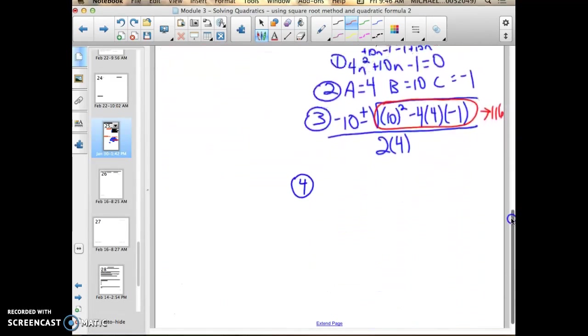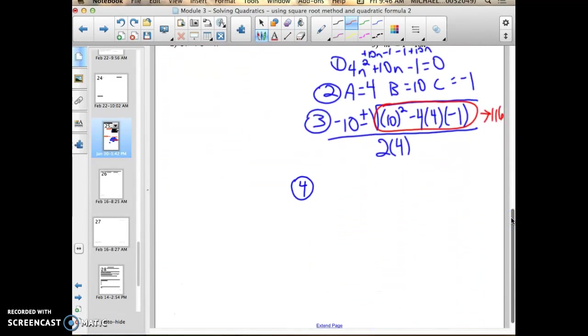This will not break down to whole numbers. So let me rewrite everything with my new simplified discriminant underneath the radical. Negative 10 plus or minus the square root of 116 all over 2 times 4 is 8. Now, in this case, I need to actually break this down into simplest radical terms.